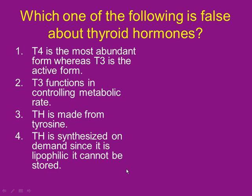Which of the following is false about thyroid hormone? Number one: T4 is the most abundant but T3 is the most active — that's true. Number two: T3 functions in controlling metabolic rate — that's true. Number three: thyroid hormone is made from tyrosine — that's true. So number four has to be false.